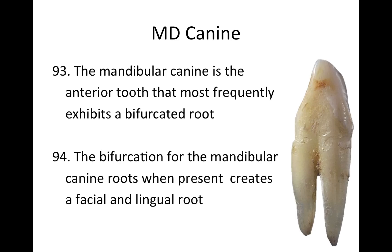The mandibular canine is the anterior tooth that most frequently exhibits a bifurcated root. When bifurcation is present in the mandibular canine roots, it creates a facial root and a lingual root.